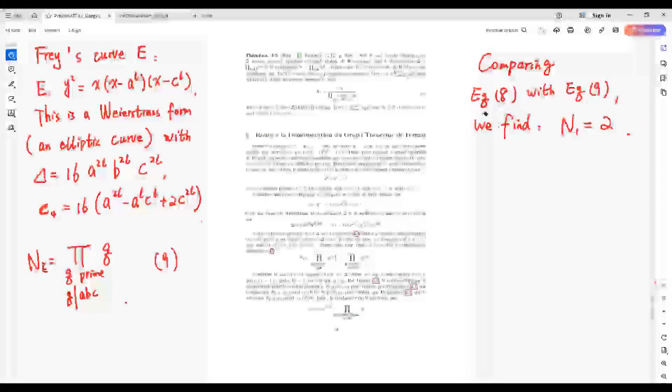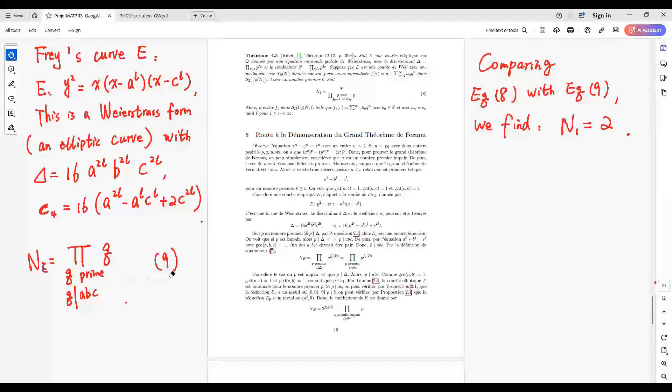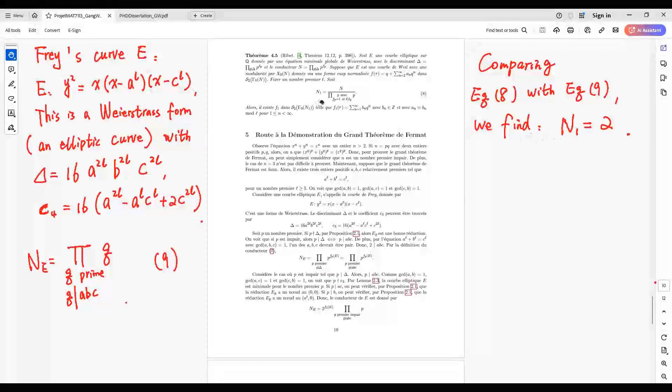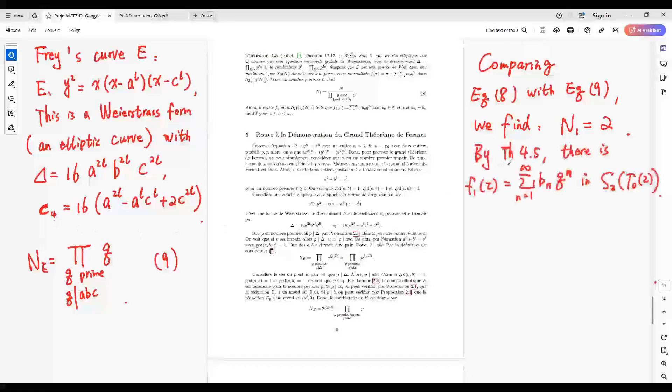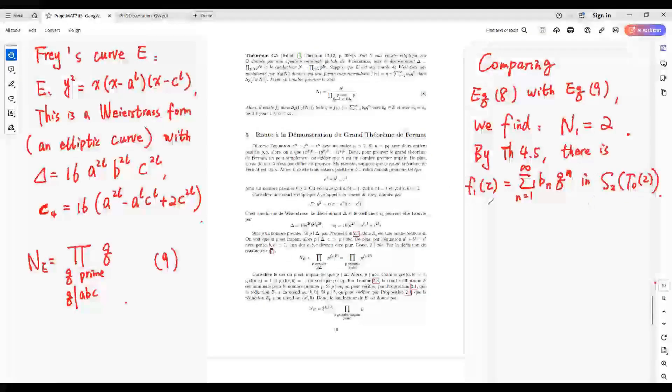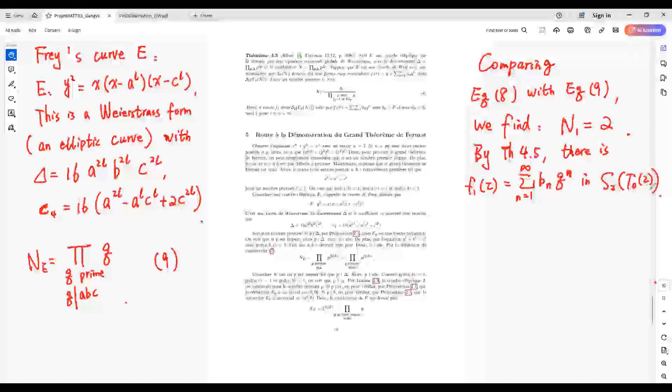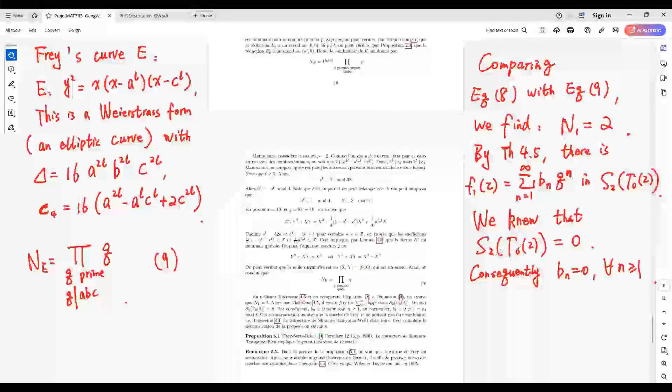Comparing equation 8 here with equation 9 here, we find N_1 equals 2. By Corollary 4.5, there is f_1 a cusp form given by modular form in S_2 (Γ_0(2)).